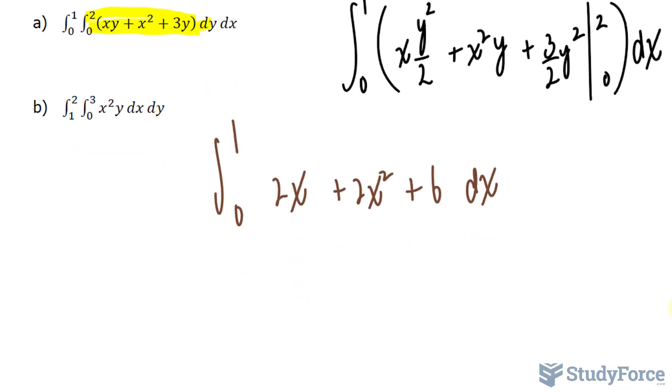Now, let's do this really quickly. This becomes 2x squared over 2. That cancels out. That becomes 2x cubed over 3. And that becomes 6x, evaluated at 1 and 0.